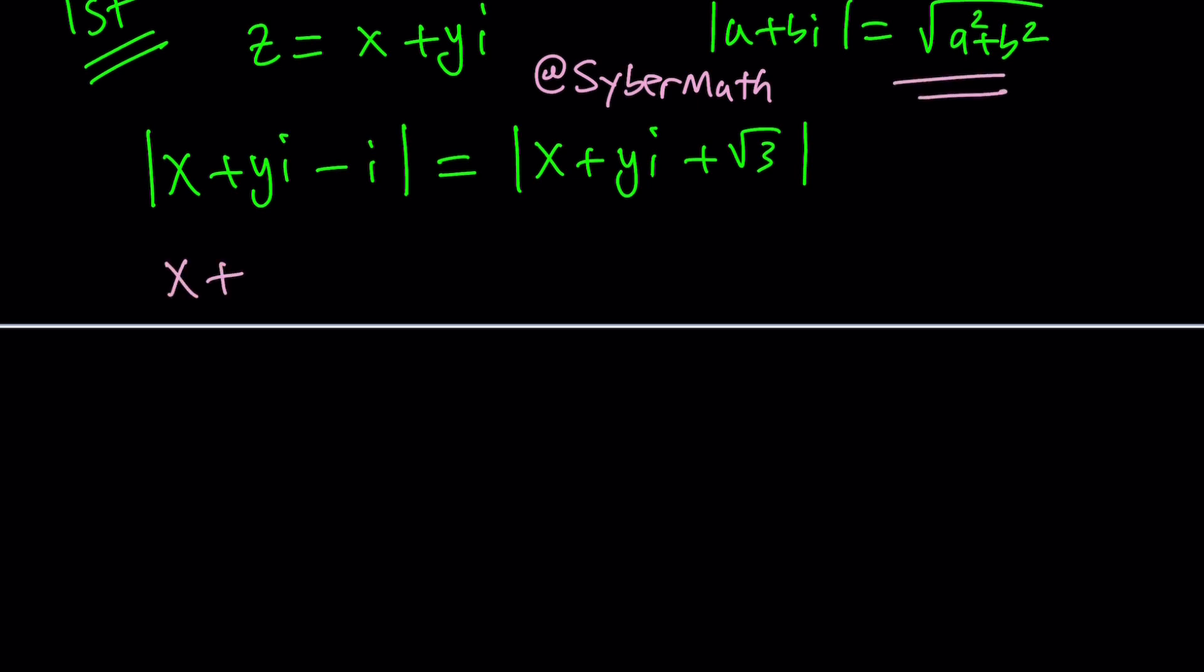I just want to remind you that this is not about complex analysis, but more like complex numbers. I have another channel called CyberMath, which is more about real numbers, algebra, number theory, trigonometry, and a tiny bit of geometry. How do we proceed? By using the definition, real and imaginary parts. Here, notice that the imaginary part becomes y minus 1, and here the real part is x plus root 3 and the imaginary part is y. The imaginary part is just the coefficient of i, which does not include i in it.